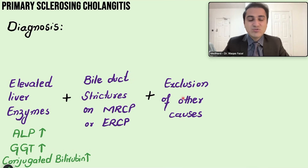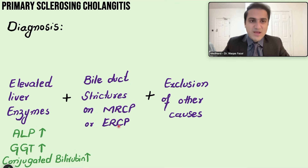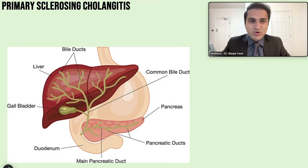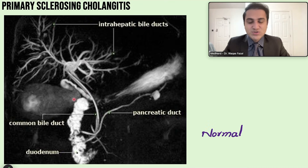The third key criterion for diagnosis is exclusion of other causes. Diagnosis is essentially one of exclusion: elevated cholestatic liver enzymes, bile duct strictures and fibrosis on MRCP, with other causes excluded. Looking at the animated picture, the dye is injected and travels through the bile ducts, showing their structure.